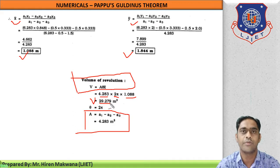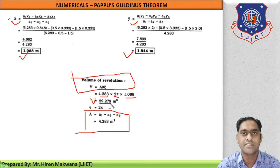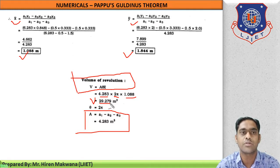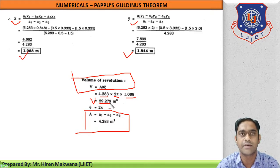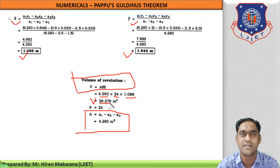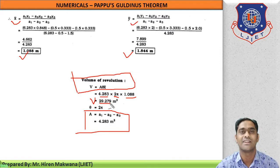So students, these are the two numericals of Pappus-Guldinus theorem. You have practiced these problems, so now you need to speed up and do more examples on your own. These two examples are repeated again and again in your notebook, and you will master this method. From today onwards this chapter will close, and from Monday we will start another chapter to complete the remaining syllabus. Thank you students, thank you very much.